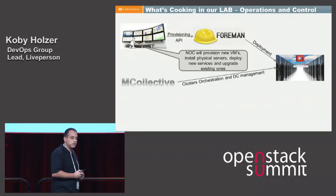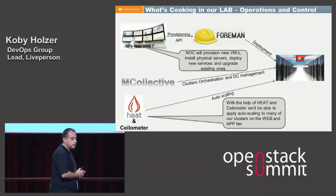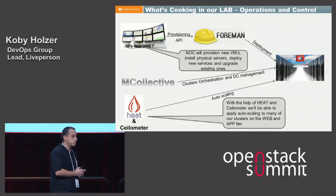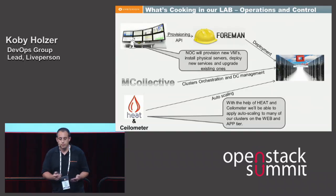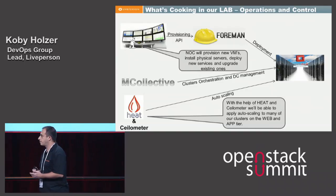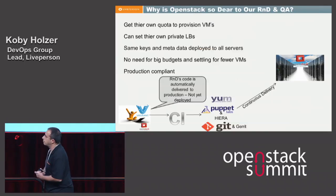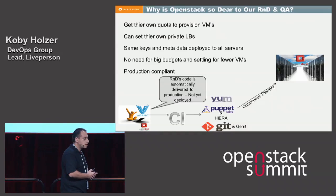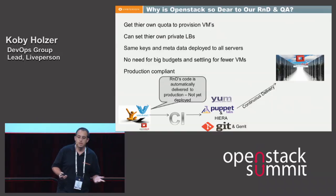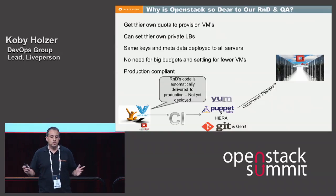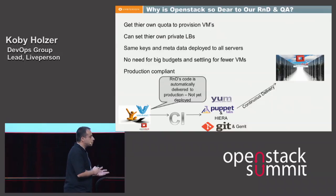Another very interesting thing happening in the lab is autoscaling. We are looking at Heat and Ceilometer, and also Scala, to autoscale. It looks very promising, and of course it's part of the Havana distribution, which will make it much easier to implement. OpenStack is also used in our R&D environment — it's very valuable to our R&D because they can get their own quota to provision VMs, set their own private load balancers, and have the same keys and metadata deployed on all services, without needing big budgets like they used to in the past.